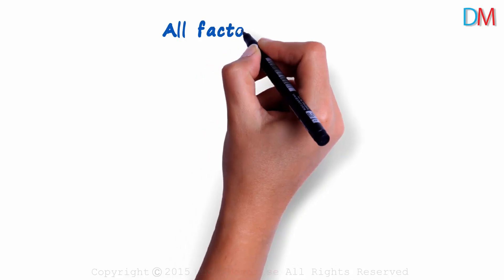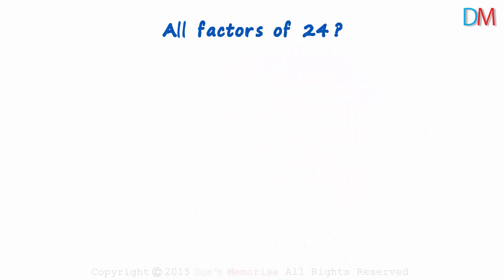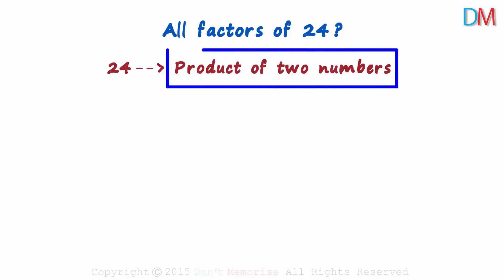How do we find all the factors of 24? It's simple. We write the number as a product of two positive numbers. We have to think of all possible combinations though.